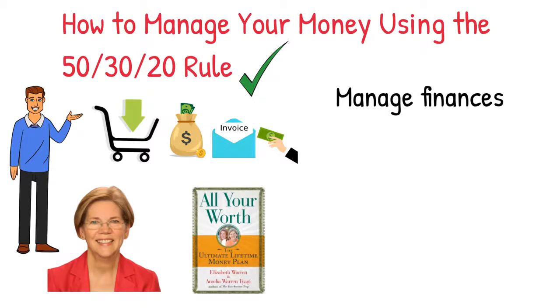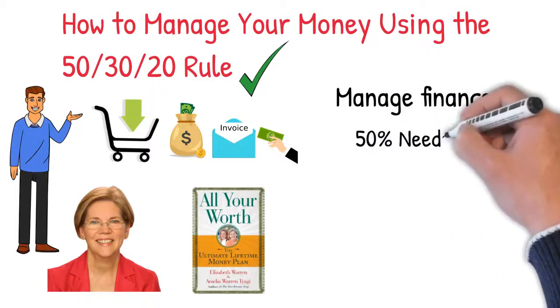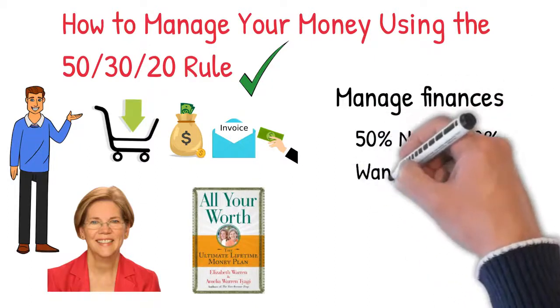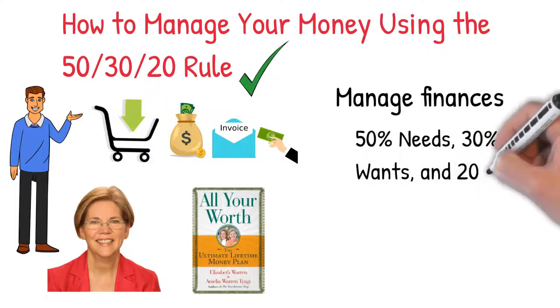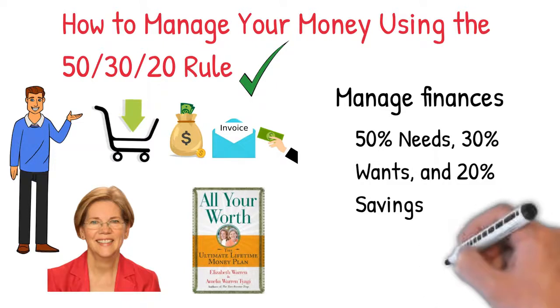This budgeting rule requires you to divide your after-tax income into three: 50% needs, 30% wants, and 20% savings. Let's break down the budgeting rule next.